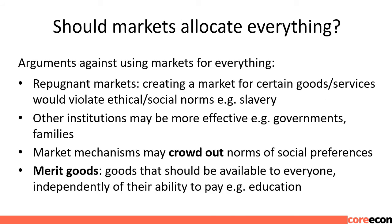Limits to Markets: Should markets allocate everything? Arguments against using markets for everything include: repugnant markets — creating a market for certain goods or services would violate ethical or social norms, e.g., slavery; other institutions may be more effective, e.g., governments or families; market mechanisms may crowd out norms of social preferences; and merit goods — goods that should be available to everyone independently of their ability to pay, e.g., education. Watch the video: Michael Sandel investigating the moral limits of markets in his TED Talk 'Why We Shouldn't Trust Markets With Our Civic Life.'